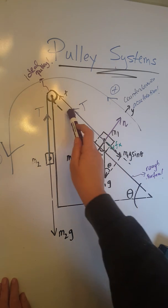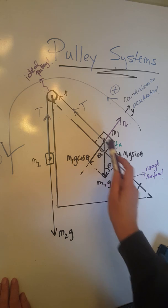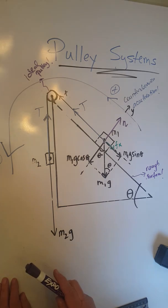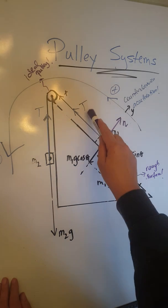Along the x, we have three forces, T, Fk, and M1g sin theta. This object will have to accelerate up the ramp, so therefore these forces must be unbalanced in the favor of T.